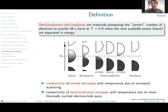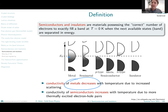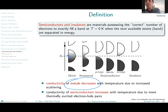For metals, conductivity typically decreases with temperature because of increased resistivity due to scattering. In a metal, the difference between the highest occupied and lowest unoccupied state is zero, so exciting electrons costs no energy — they are essentially freely mobile. However, they are scattered by moving atomic cores, by phonons. With increasing temperature, we have more lattice vibrations, so scattering increases and conductivity decreases.